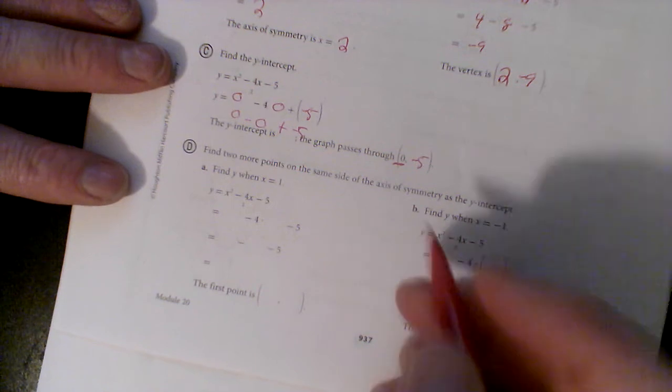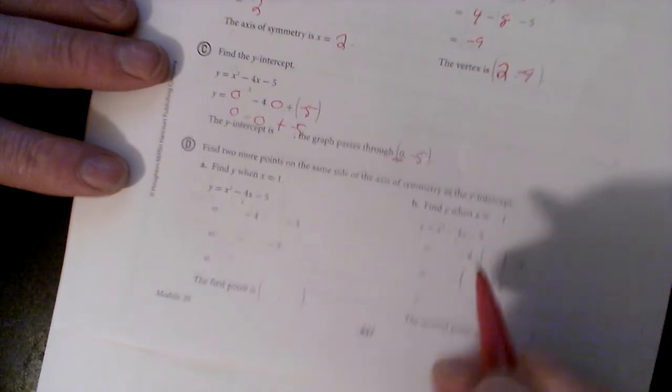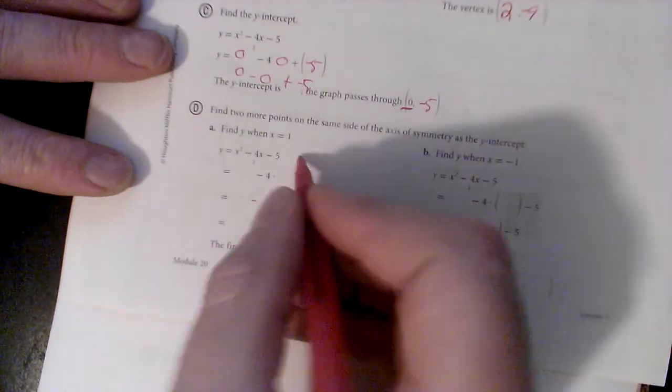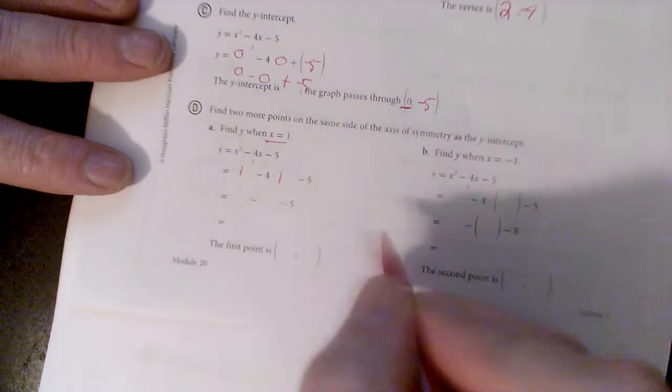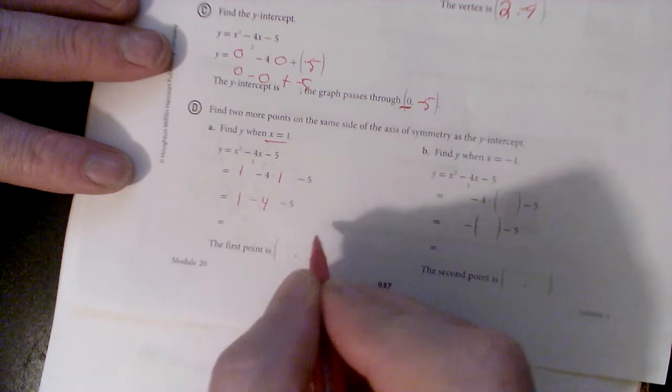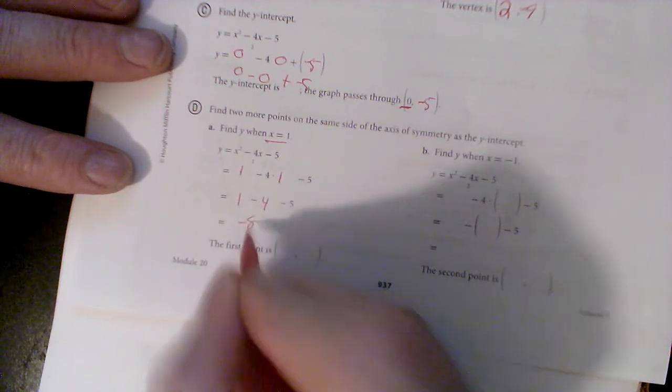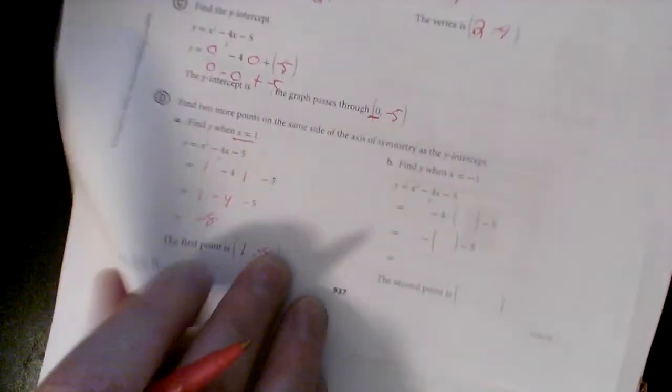Because 0 squared is 0, minus 4 times 0 is 0, plus negative 5 gives me 0, negative 5. So let's go over here, we know our vertex is 2, negative 9, and my y-intercept was 0, negative 5. All right, so find two more points on the same side of the axis of symmetry as the y-intercept. If we plug in 1, that's 1 squared minus 4 times 1 minus 5. 1 squared is 1 minus 4 minus 5, negative 3, negative 8. So we got one point of 1, negative 8.